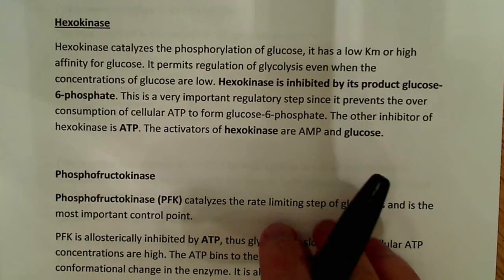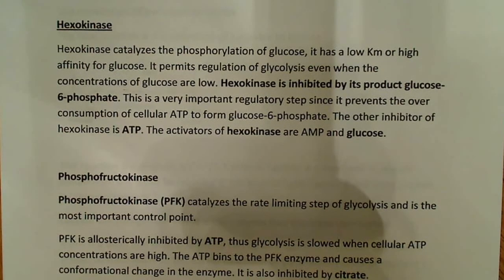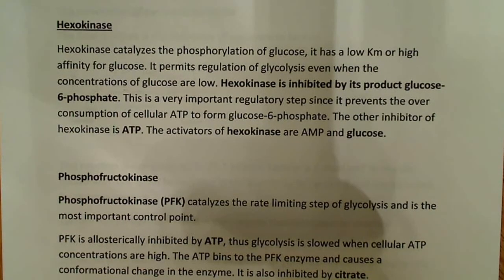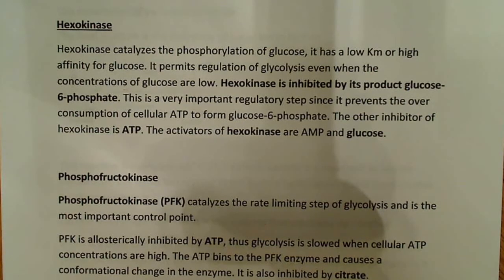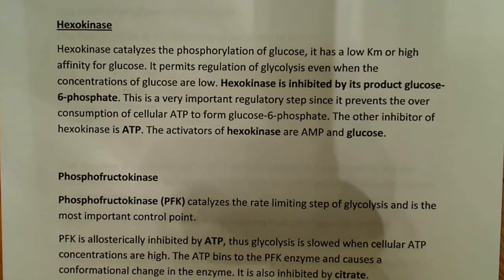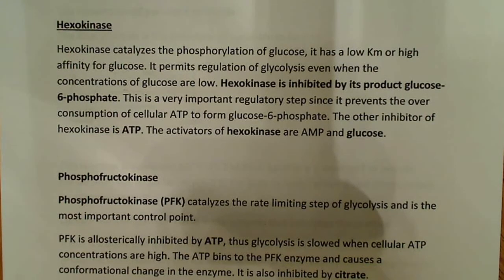So, hexokinase catalyzes the first step—the phosphorylation of glucose. It has a low Km, which means a high affinity for glucose, so it binds glucose even at very low concentrations. This permits regulation of glycolysis when concentrations of glucose are low. Hexokinase is inhibited by its product, glucose-6-phosphate. That's known as feedback inhibition, or product inhibition—the product comes back to allosterically bind with hexokinase and inhibit it.